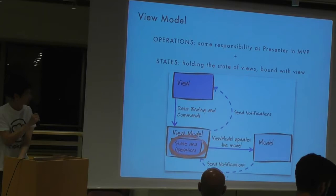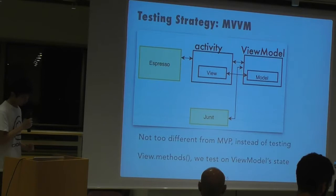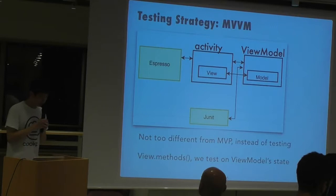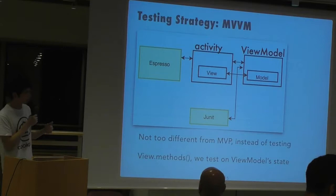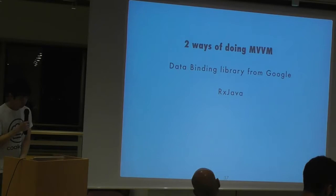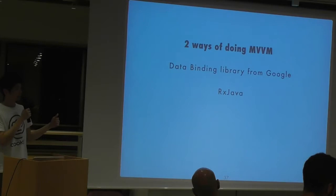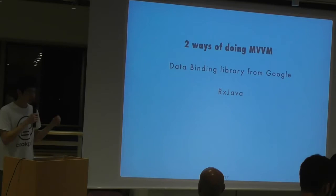This is what a view model actually means: it covers operations and also the states. The testing strategy for MVVM is not too different from MVP — you can still use JUnit to test the view model. However, the difference is that you can test on the view model state directly, instead of testing on the method call. There are two ways of doing MVVM. The only thing that differs is data binding — as long as you can do the data binding, it is MVVM. When the data binding library came from Google, MVVM started to become famous in Android. But you don't necessarily have to use data binding — you can also do it using RxJava.